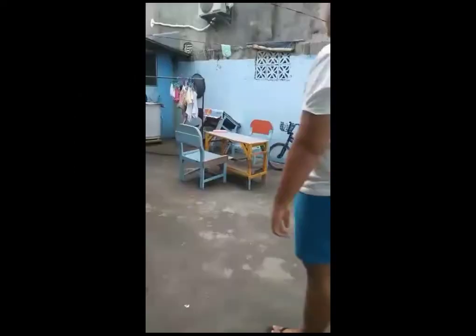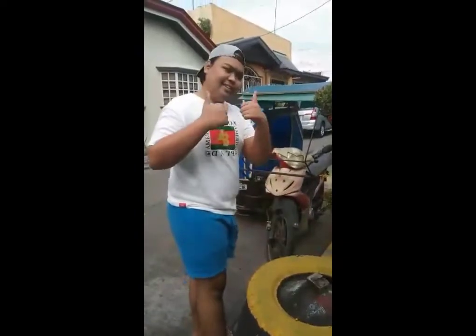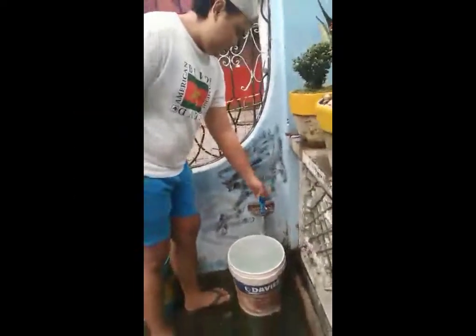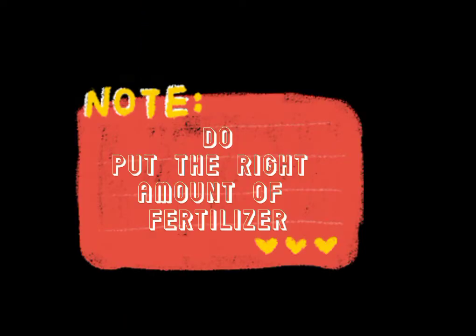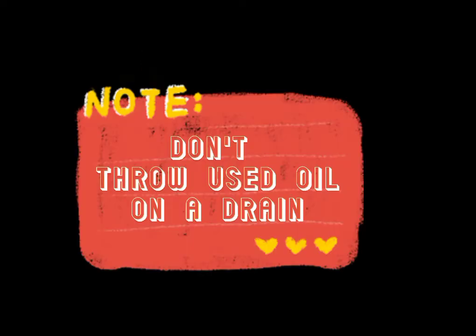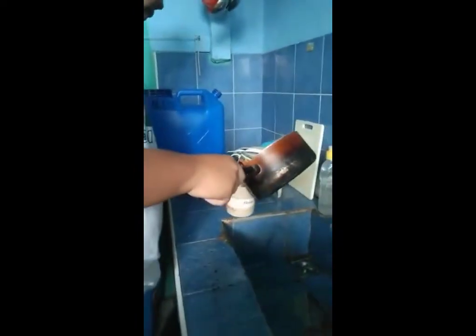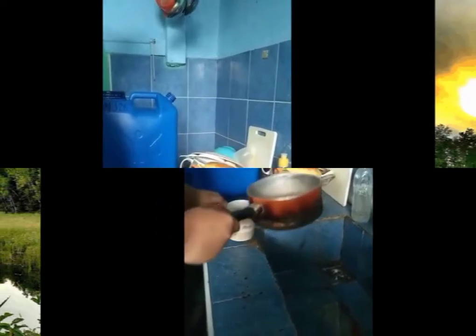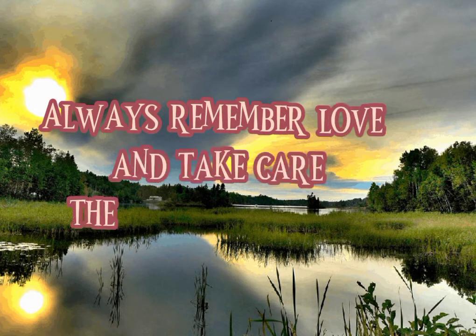Do's and don'ts: Don't throw your trash anywhere. Do always look for the correct bin for throwing waste. Don't waste water. Don't put too much fertilizer — use only the right amount. Don't throw used oil down the drain. Always remember: love and take care of God's creation.